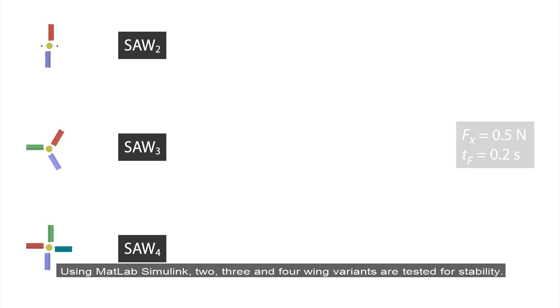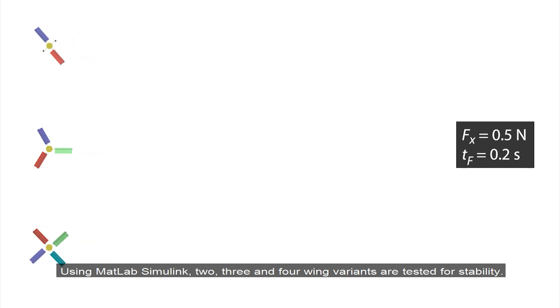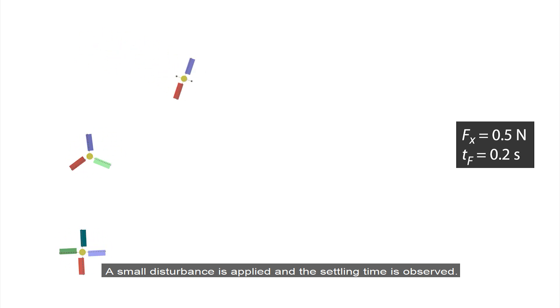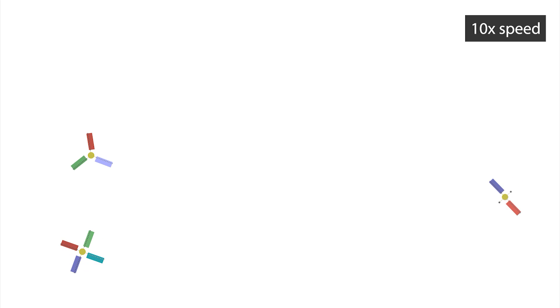Using MATLAB Simulink, two, three and four wing variants are tested for stability. A small disturbance is applied and the settling time is observed. SOAR 2 takes substantially longer to settle.